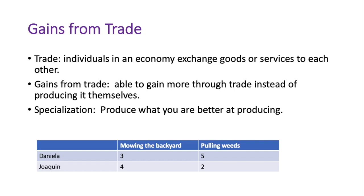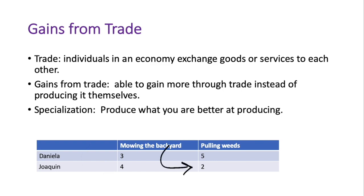They both work at a lawn mowing company — one pulls weeds while the other mows backyards. Daniela can mow three backyards and pull five bags of weeds in the same time frame, so in one hour, Daniela can mow three lawns or pull five bags of weeds. Joaquin, on the other hand, can mow four lawns in an hour or pull two bags of weeds.